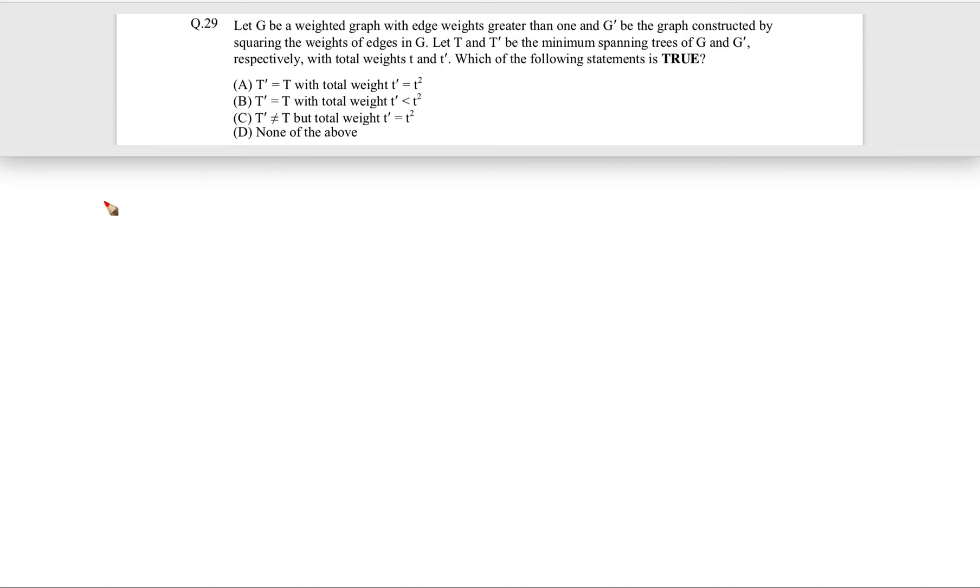Okay, now let's see this question. This question came in GATE 2012 for two marks. The question is: let G be a weighted graph with edge weights greater than 1. So let's consider an example. Let's say there are four vertices and this is a graph. This is A, this is B, this is C, this is D.